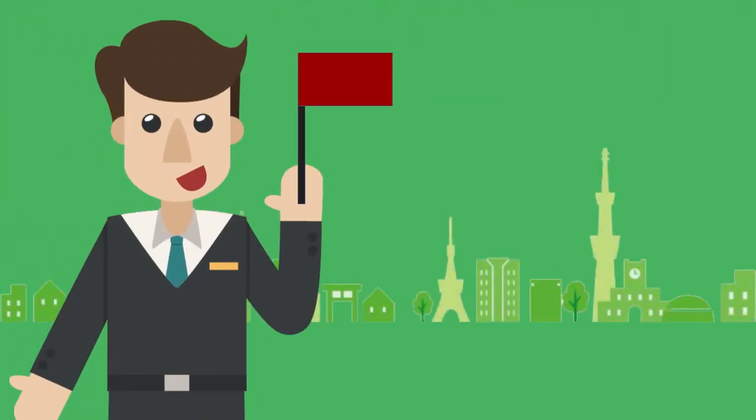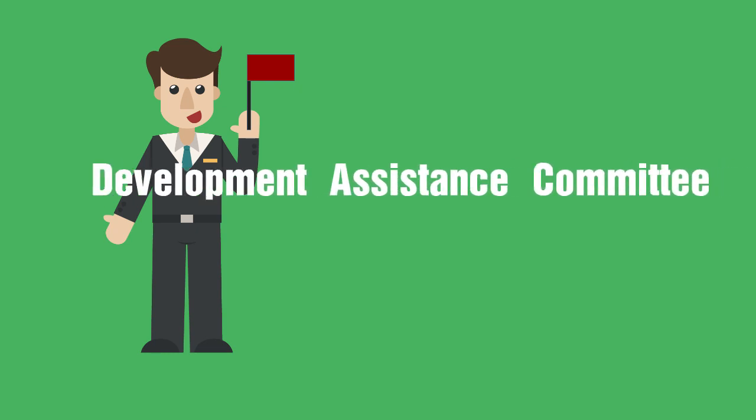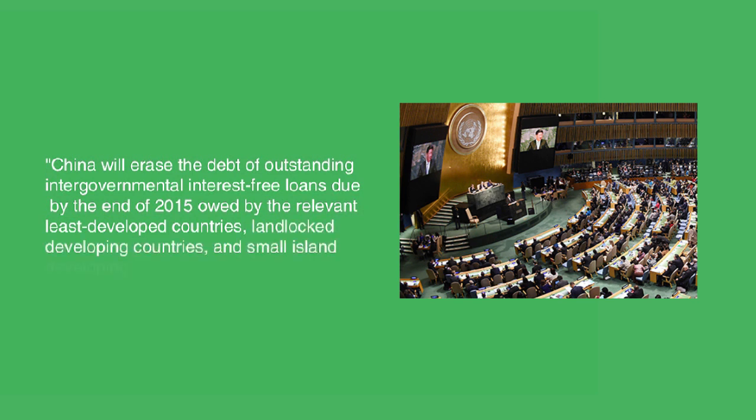China's foreign aid comes with its own characteristics. First, China tends to focus on the development of the world's least developed countries, while the Development Assistance Committee countries favor more advanced countries. President Xi outlined in his speech at the Development Summit that China will erase the debt of the outstanding intergovernmental interest-free loans due by the end of 2015, owed by the relevant least developed countries, landlocked developing countries, and small island developing countries.